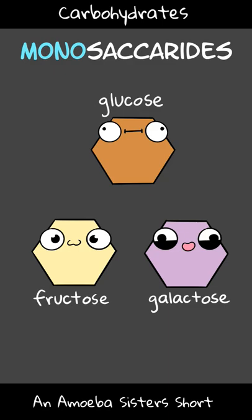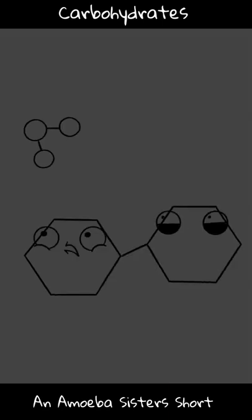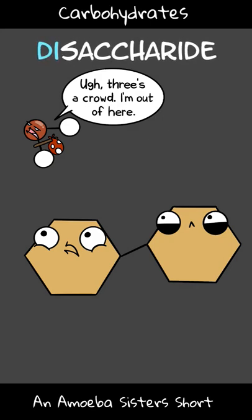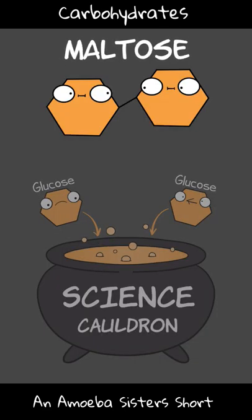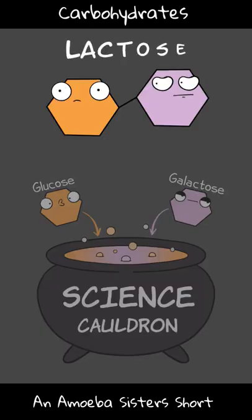But if two monosaccharides are combined, which can happen in a dehydration reaction — a reaction where a water molecule is lost — you can get a disaccharide. For example, put two glucose sugars together, you get the disaccharide maltose. Or put a glucose and fructose together, you get sucrose. Or put glucose and galactose together, you get lactose.